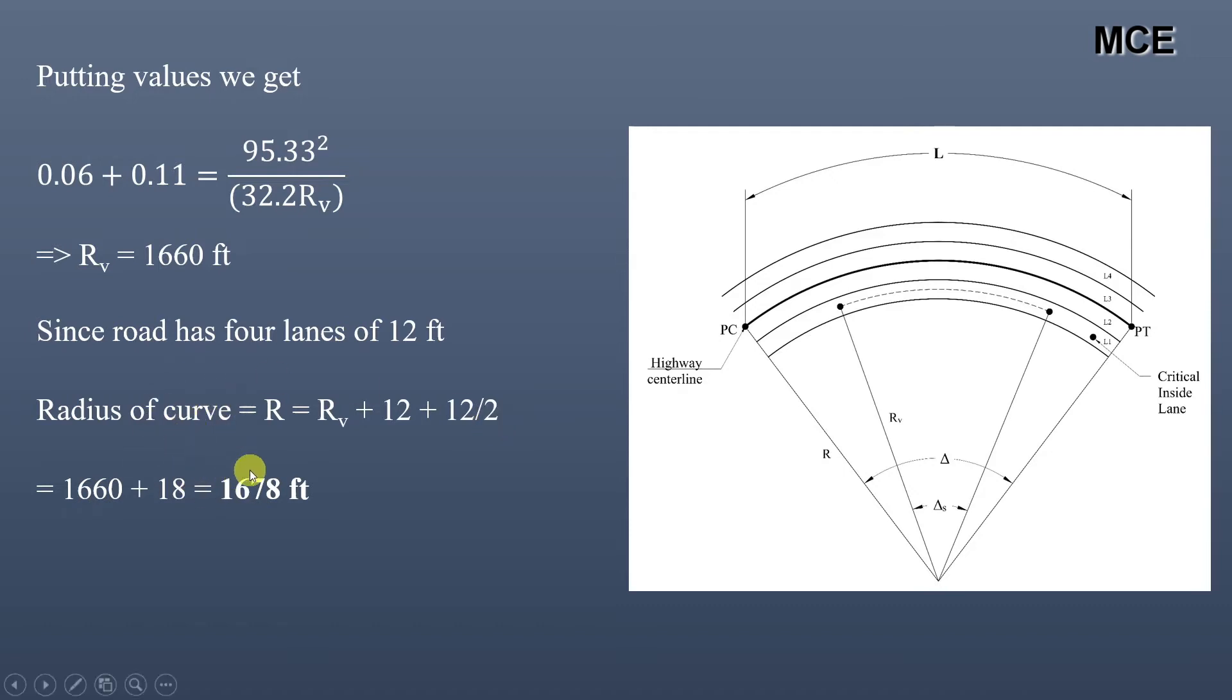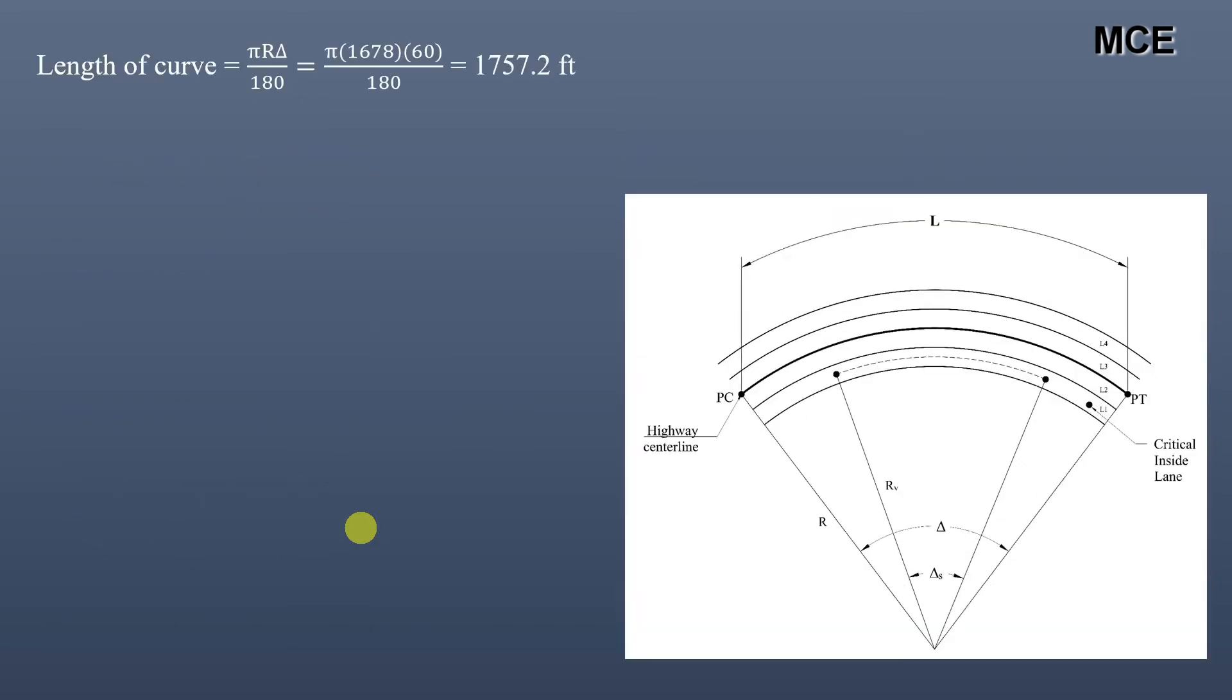Now, the central angle of the curve Δ = 60 degrees. The length of curve is given as L = πRΔ/180 = π(1678)(60)/180 = 1757.2 feet.